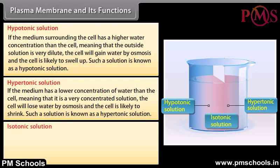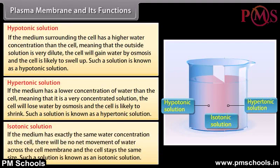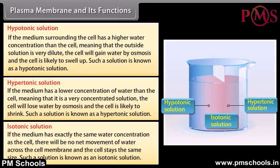If the medium has exactly the same water concentration as the cell, there will be no net movement of water across the cell membrane and the cell stays the same size. Such a solution is known as an isotonic solution.